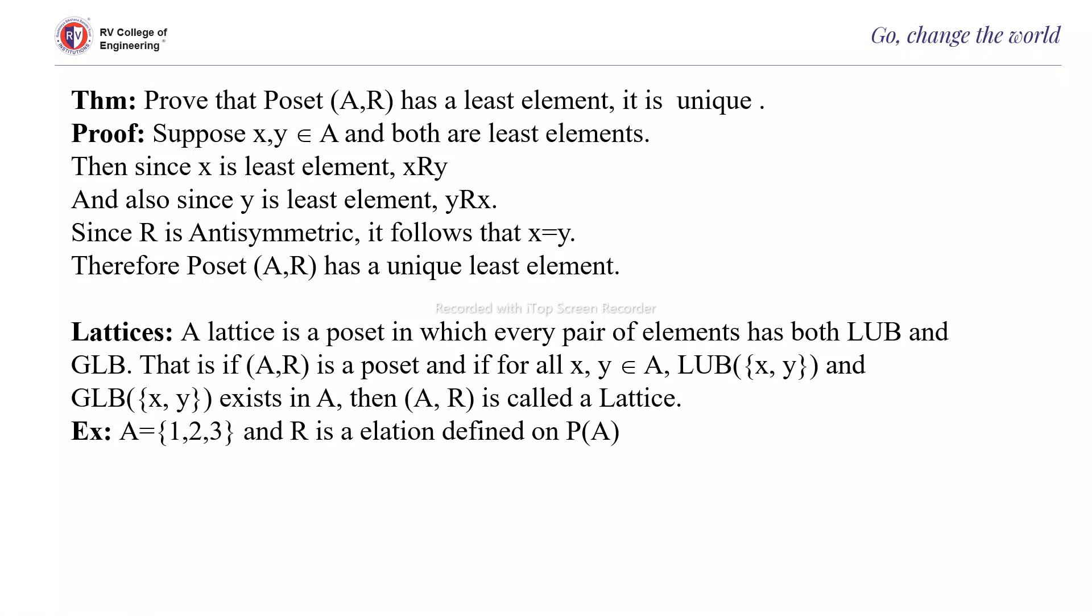Next is the definition of a lattice. So lattice is a poset in which every pair of elements has both least upper bound and greatest lower bound. That is, if (A, R) is a poset and if for all x, y belongs to A, LUB and GLB of (x, y) exist, then (A, R) is called as a lattice. Example: A = {1, 2, 3} and R is a relation defined on the power set of A. It is a poset.